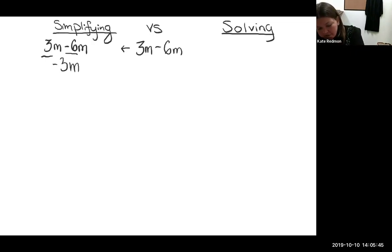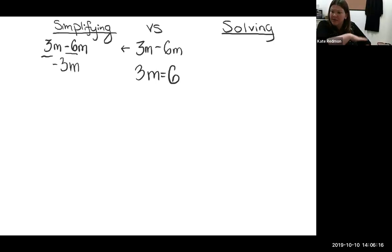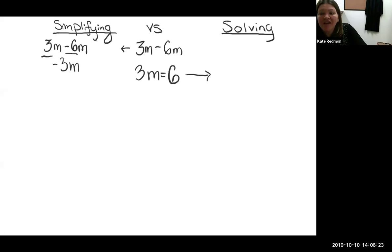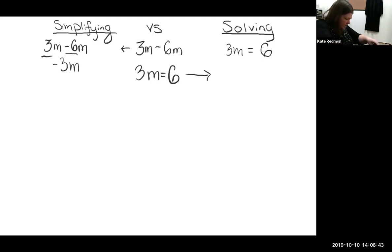Now let's look at something similar. Is this an expression or an equation? Do you see the equal sign? Yes — it's an equation. Do you see information on both sides of the equal sign? It's two-sided. It's an equation, so I can solve it. With three M equals six, I can actually figure out what M is equal to.